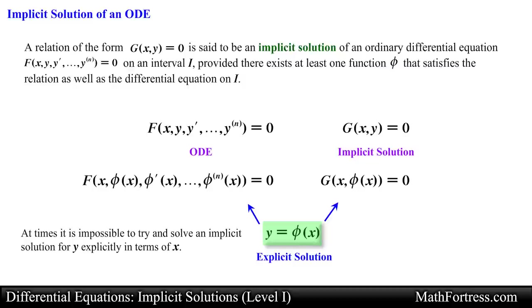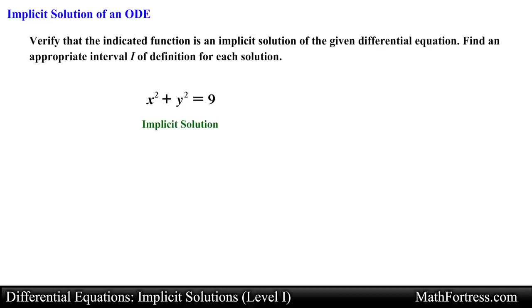For the most part there is usually no need, or as a matter of fact it is just plain impossible, to try and solve an implicit solution for y explicitly in terms of x. The best we can do is to numerically generate the graph of the solution and determine an appropriate interval of definition. For example, let's verify the following implicit solution: x squared plus y squared equals 9, and the differential equation to verify is y prime equals negative x over y. Just as we verify explicit solutions of ODEs we first need to find the derivative of the solution.